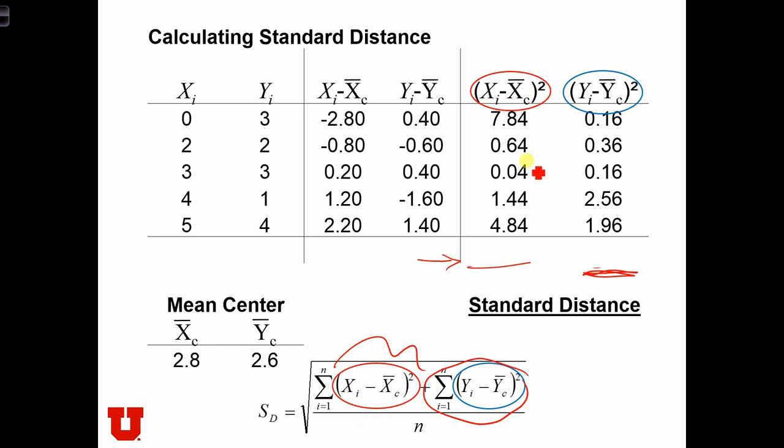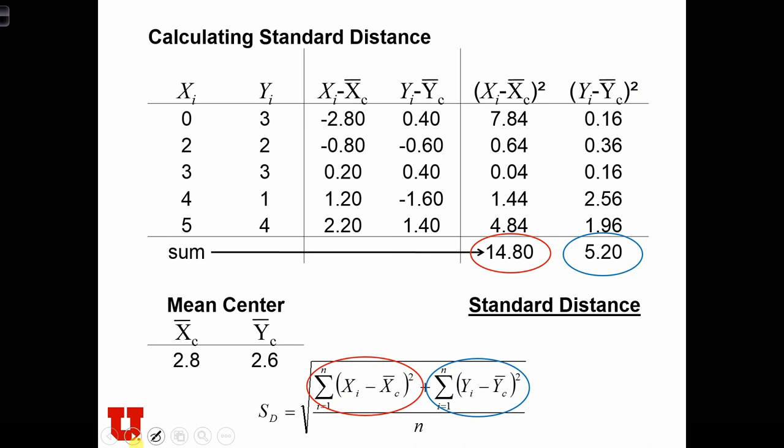And I'm not going to do it by hand, but this is roughly 8, 12, around 14. And this one is roughly 2, 4 and a half, about 5 and a half. So the true answers are 14.8 and 5.2.